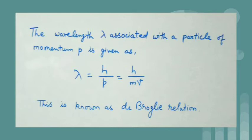We have already seen that for a photon p is equal to h by lambda so that lambda is equal to h by p and this is De Broglie relation which is same for both radiations and particles.